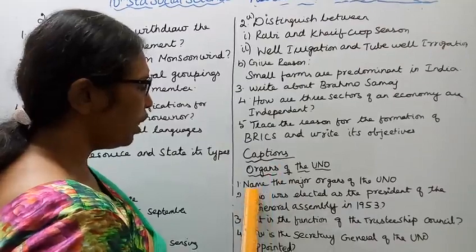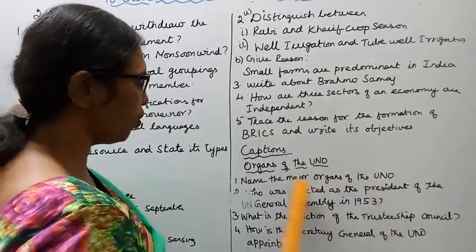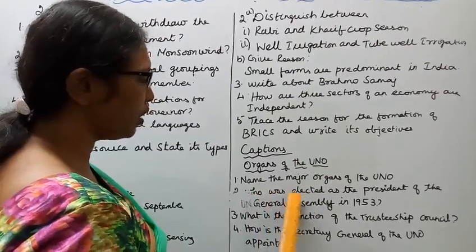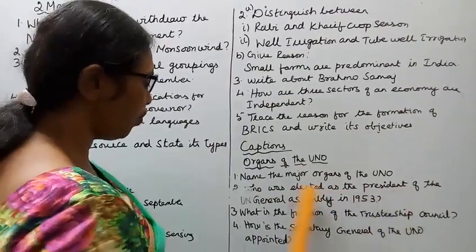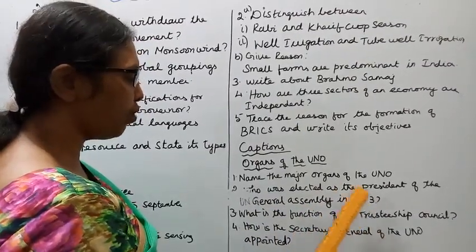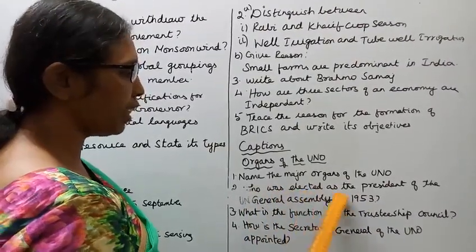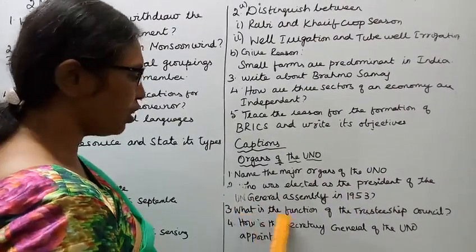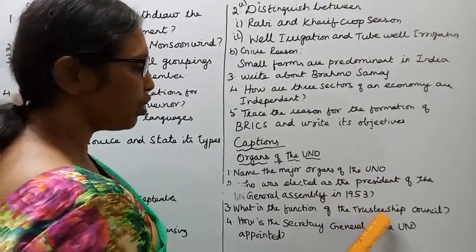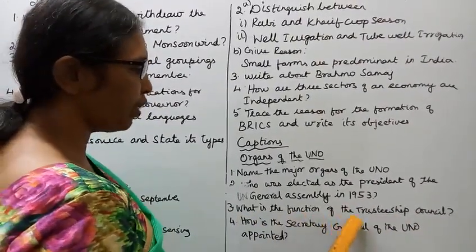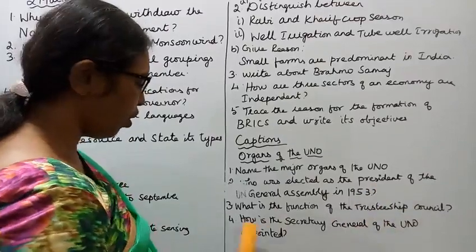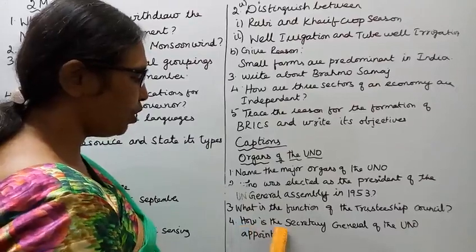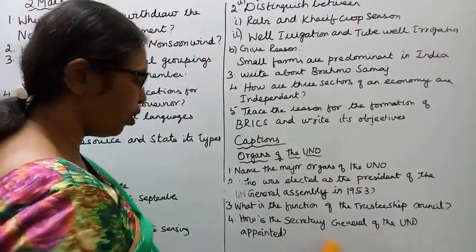Eight marks: Name the major organs of the UNO. Who was elected as the President of the UN General Assembly in 1953? What is the function of the Trusteeship Council? How is the Secretary General of the UNO appointed?